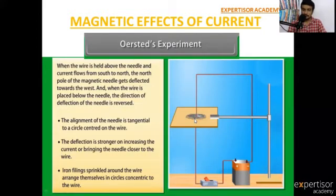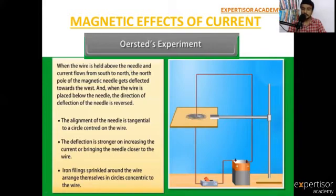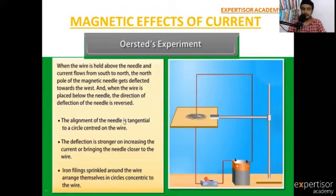In place of iron pieces, you take a compass needle. When the wire is held above the compass needle and current flows from south to north, the north pole of the magnetic needle gets deflected. When the wire is placed below the needle, the direction of deflection is reversed. The alignment of the needle is tangential to a concentric circle centered on the wire.